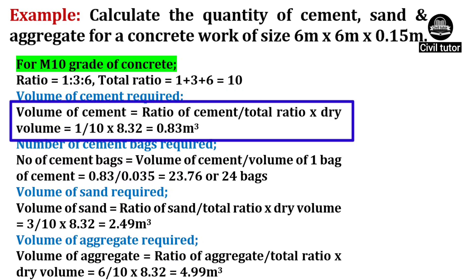Volume of cement required will be equal to ratio of cement upon total ratio, multiplied by dry volume. As the ratio of cement is 1, total ratio is 10 and dry volume is 8.32, on substituting these values, volume of cement will be equal to 0.83m³.